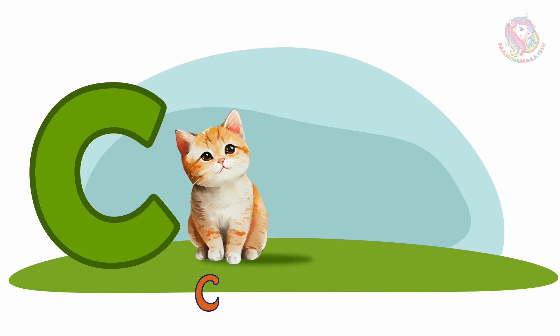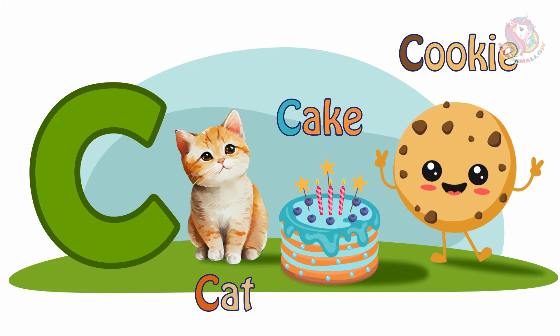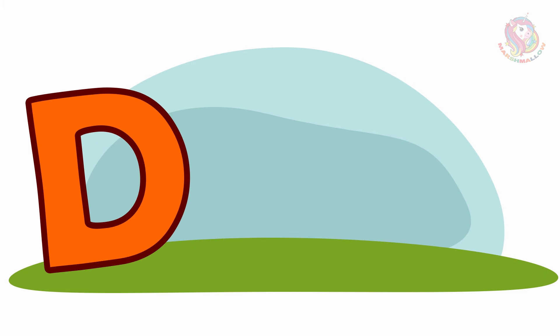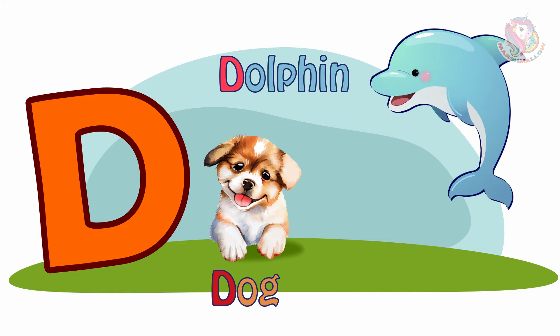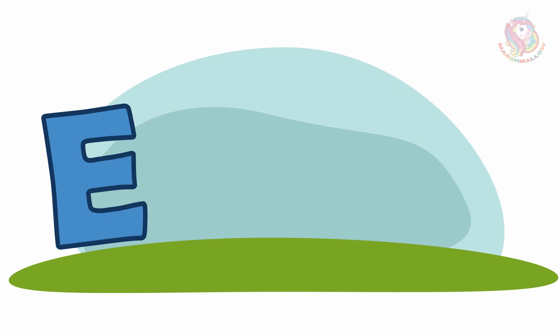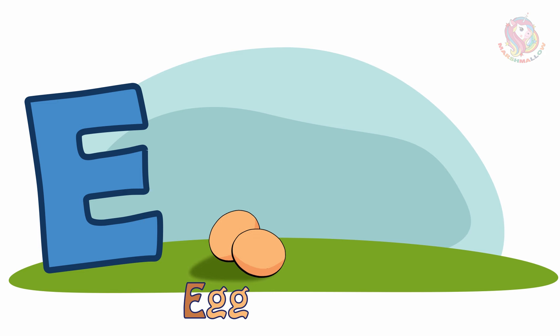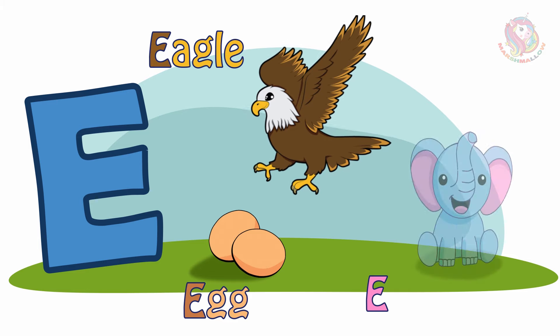C - C is for Cat. C is for Cookie. C is for Cake. D - D is for Dog. D is for Dolphin. D is for Donut. E - E is for Egg. E is for Eagle. E is for Elephant.